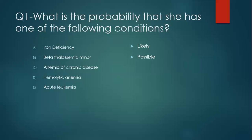Beta thalassemia minor is possible because it is prevalent in our country. Anemia of chronic disease is less likely — not impossible, because sometimes chronic disease starts with anemia as the first presentation. Hemolytic anemia is also less likely, and for acute leukemia it is unlikely, because after three months the patient is developing progressive pallor with no evidence of hepatomegaly, lymphadenopathy, fever, or bleeding tendency. But still we cannot say it is definitely not acute leukemia, because in medicine we cannot be sure unless we proceed to investigations.